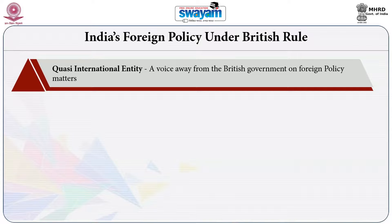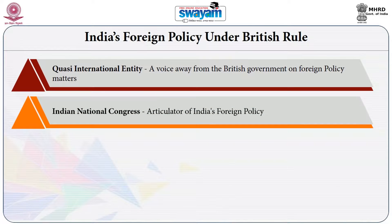From the 1920s onwards, there were references to India's foreign policy perspectives in the discourses of India's national leadership, broadly connected with India's national movement. For instance, in 1921, one of the resolutions of the Indian National Congress stated that the British government no longer represented the opinion of Indians. In that sense, the foreign policy of India's national leadership was almost like a voice away from the British government vis-à-vis foreign policy matters. The Indian National Congress articulated India's foreign policy at that point in time.